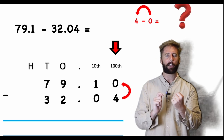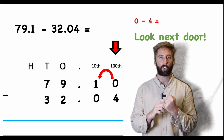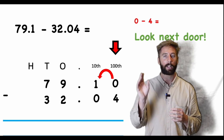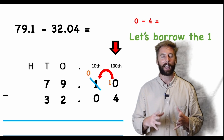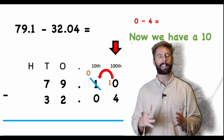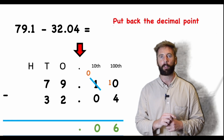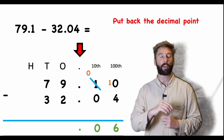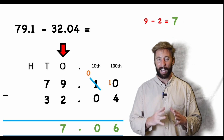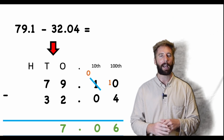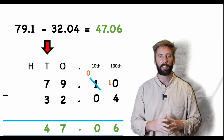Let's put the placeholder in. Now it reads zero subtract four — can I do that? No. Can I flip it and say four subtract zero? No, subtraction is not commutative! So I look next door: I have one tenth. I borrow that, leave zero tenths, and move that one tenth across into the hundredths column — now I have ten. Ten subtract four equals six. Moving to tenths: zero subtract zero is zero. Now I put my decimal point into my answer — really important. Ones: nine subtract two is seven. Tens: seven subtract three is four. Answer: 47.06.